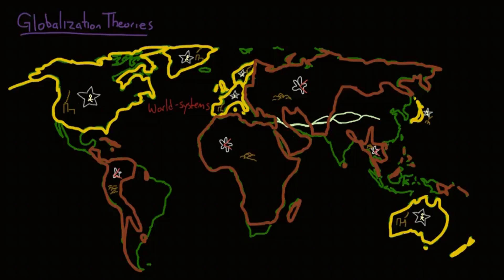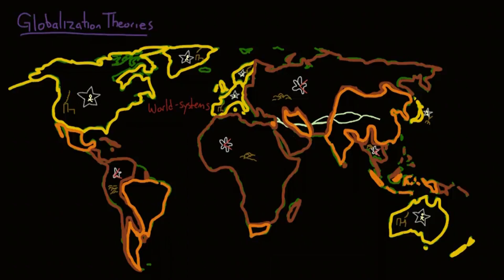Semi-periphery countries, like India and Brazil, make up the middle ground between core and periphery. They are often not dominant in international trade, but they have a relatively diversified and developed economy.